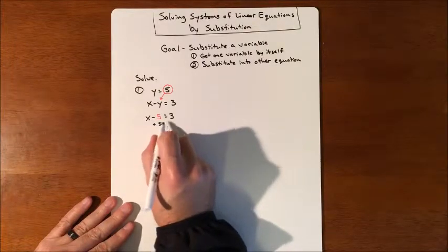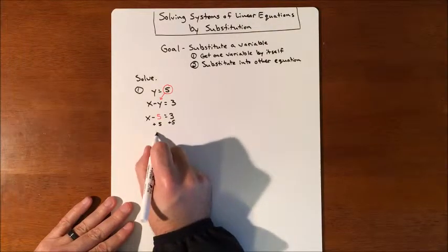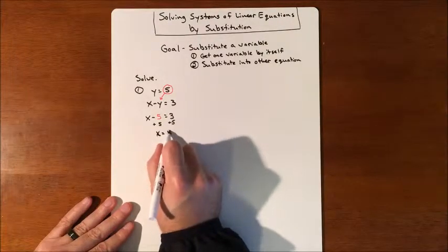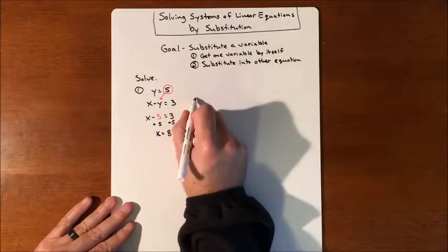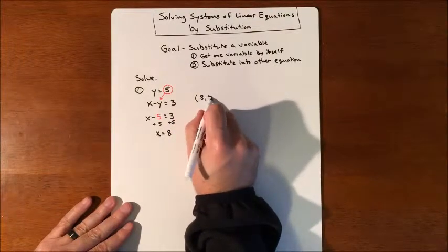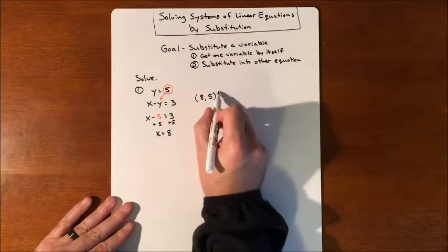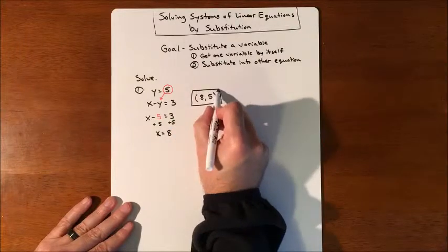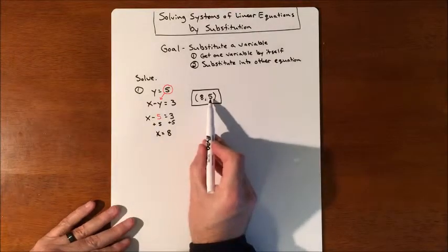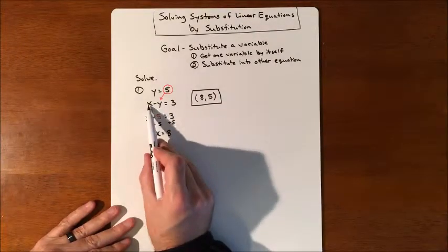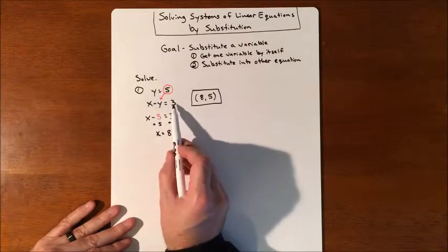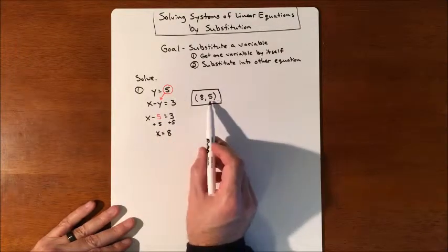We add 5 to both sides and x is going to equal 8. So our solution is the coordinate (8, 5). If we graph them, the lines would intersect at (8, 5). If we want to verify, we take the 8 and the 5, substitute them in for x and y, and make sure they subtract to 3 and the y value is 5.